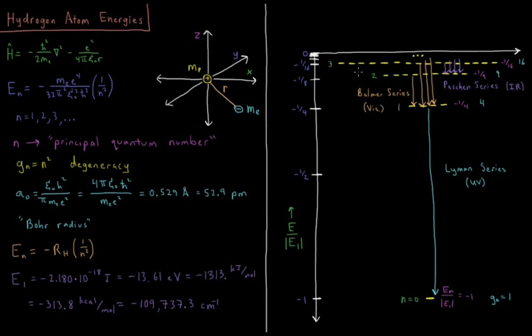I have these quantum numbers mislabeled, so I'm going to fix that right now. Much better. So 1 ninth for n equals 3 relative to the original n equals 1 level, and 1 sixteenth approaching all the way up to zero in energy.